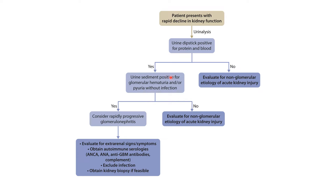If there is protein and blood, check the urine sediment. If it is positive for glomerular hematuria — meaning RBC casts — or pyuria without infection, this indicates inflammation in the kidney consistent with a glomerular etiology. If negative, re-evaluate for non-glomerular etiology. If positive, you are facing a case of rapidly progressive glomerulonephritis and must evaluate for extra-renal signs and symptoms.